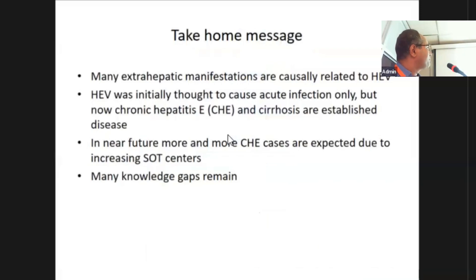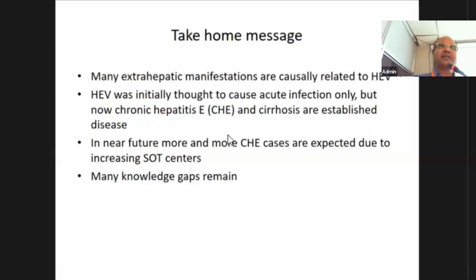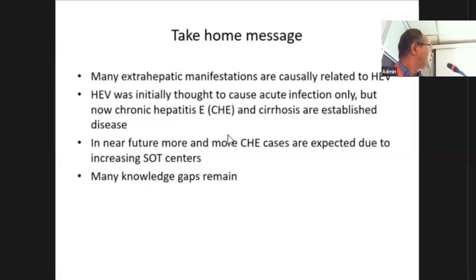Take-home message: many extra-hepatic manifestations are probably related to HEV. Initially it was thought that HEV only causes acute hepatitis, but it is now proven it may cause chronic hepatitis in immunosuppressed patients. In the near future, more and more such cases will be seen. However, many knowledge gaps remain — why one strain causes chronicity and another does not, geographical distribution, and many other aspects remain to be studied.